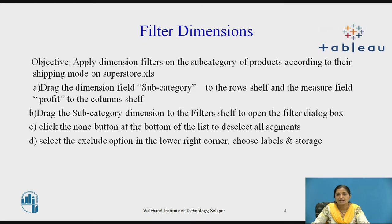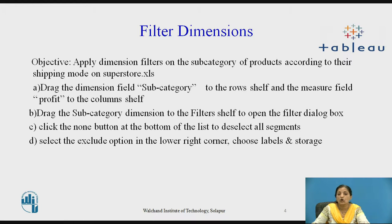Drag the dimension field sub-category to the row shelf and measure field profit to the column shelf to create a view. Drag the sub-category dimension to the filter shelf, so it opens the filter dialog box. Click the None button at the bottom of the list to deselect all the segments and select the Exclude option in the lower right corner and choose Labels and Storage.